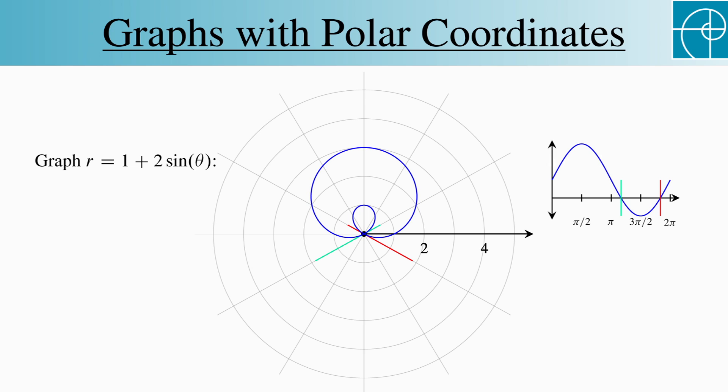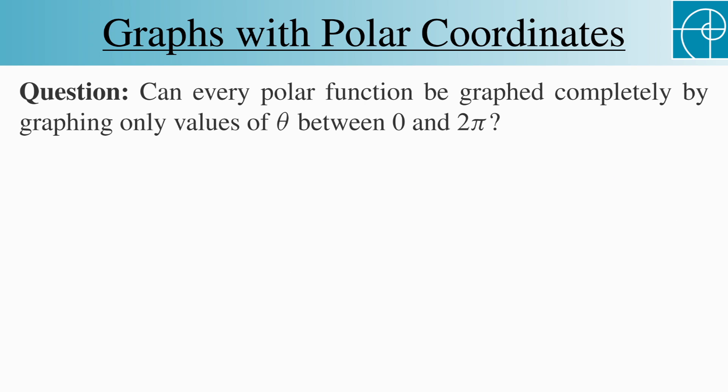I'll leave you with two questions. First, each of these graphs can be drawn completely by graphing only for values of theta between 0 and 2pi. Is that true for any polar function? Second, I refer to the equations in this video as functions, but the graphs all fail the vertical line test. What's happened to that test in this context?